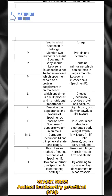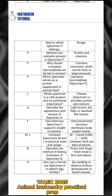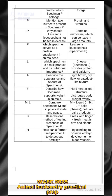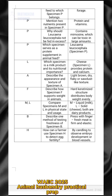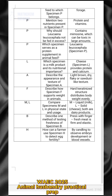For specimen L, the question is: which specimen is a milk product and what is its nutritional importance? The answer is cheese, which is specimen L, and it provides proteins and calcium. For specimen A, describe the appearance and texture. The answer is: light brown, dry, flaky or sawdust-like texture.